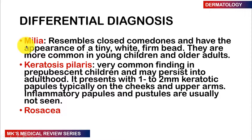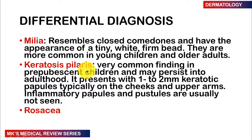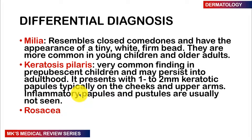Differential diagnosis includes milia, which resembles closed comedones appearing as tiny white firm beads, much more common in young children and older adults rather than adolescents. Keratosis pilaris is another differential — a very common finding in prepubescent children that may persist into adulthood, presenting as 1 to 2 mm keratotic papules typically on the cheeks and upper arms, without the inflammatory papules and pustules seen in acne. Rosacea is also a differential and will be covered in a future episode.